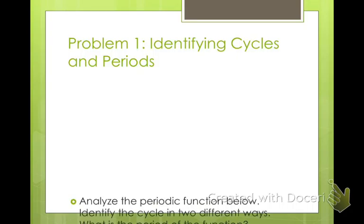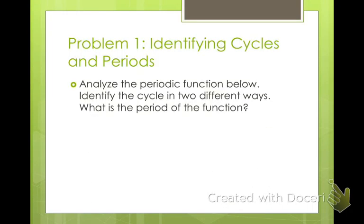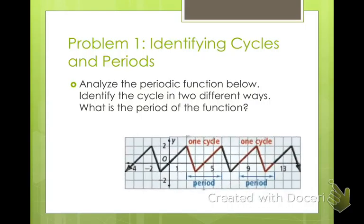Identifying cycles and periods. Analyze the periodic function below. Identify the cycle in two different ways, and what is the period of the function. So here we have this one that's kind of like a mountain. If you see on here, they talk about a period and a cycle, and they look at it from two different perspectives. In this first example, they said one cycle was from high down to low back to high again. Or you could say from x value to a corresponding x value. Either way, that's one cycle.